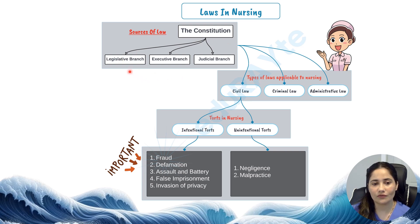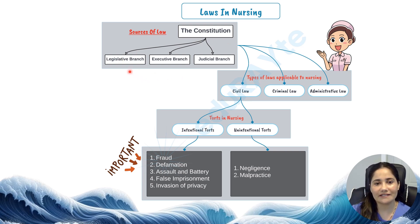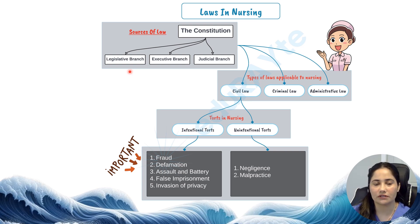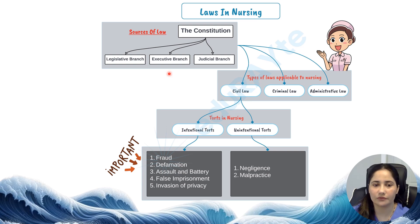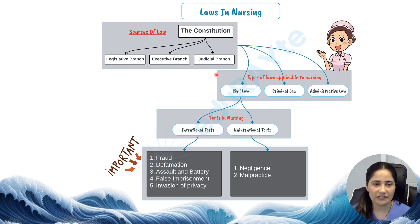First, we have the Constitution, which is like the roots of the tree providing the foundation. It is divided into three parts: the legislative branch creates statutory law, like the trunk giving structure; the executive branch implements these laws through administrative rules, like the branches that spread out; and the judicial branch interprets laws through court decisions, similar to the leaves that grow based on the branches.